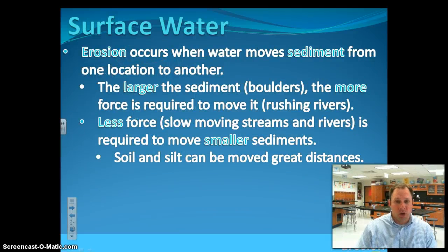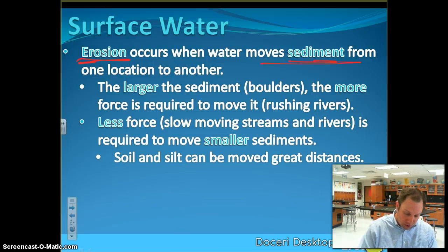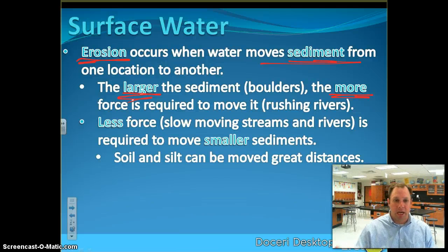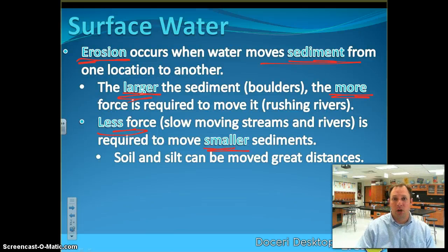Erosion occurs whenever we have runoff and it's taking sediment. Erosion moves sediment, rocks, and other things. The larger the sediment, obviously the more force is required — it's going to take a whole lot more water force to move a big rock than a little piece of sand. Less force is required to move smaller sediments in slow-moving streams. We get a lot of erosion from runoff, from surface water moving and eroding out our creeks, rivers, and land.